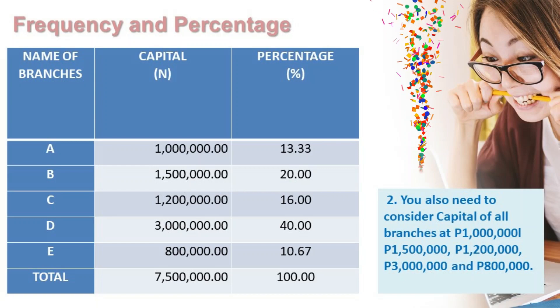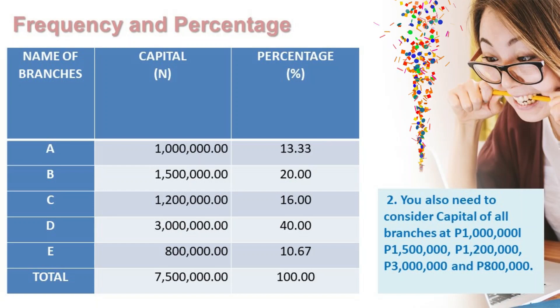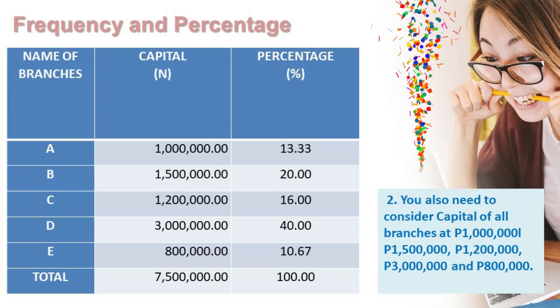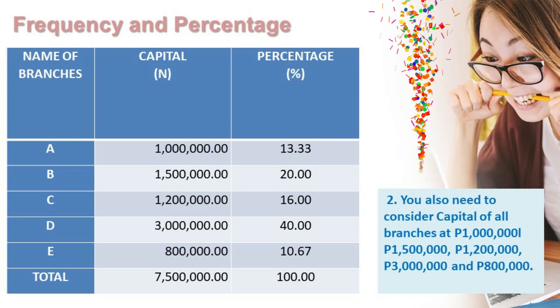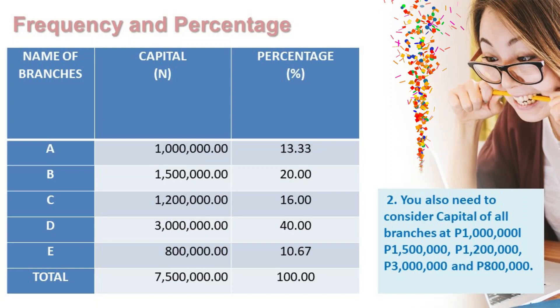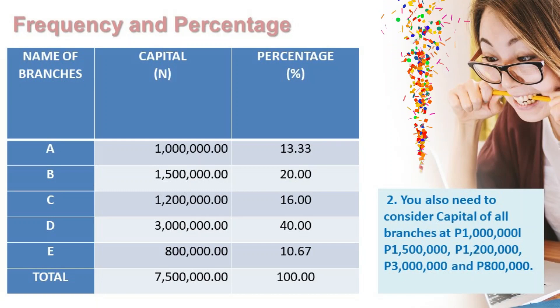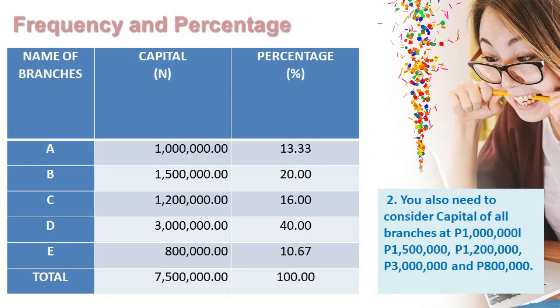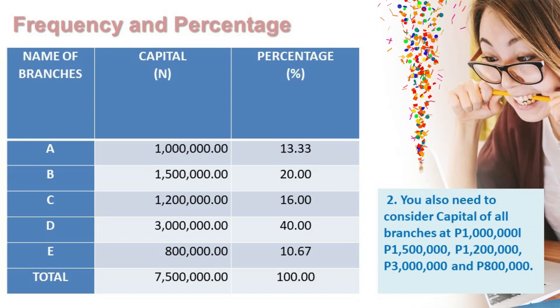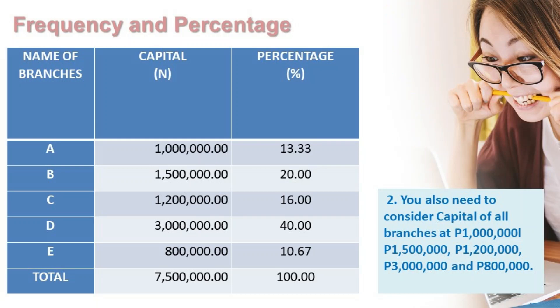Under table number two, or example number two, you also need to consider the capital of all branches: $1,000,000, $1,500,000, $1,200,000, and $3,800,000. You prepare your table listing branches A, B, C, D, E and their respective capital amounts: $1,000,000, $1,500,000, $1,200,000, $1,200,000, and $3,800,000. The total is $7,500,000, which will be your base and your divisor.